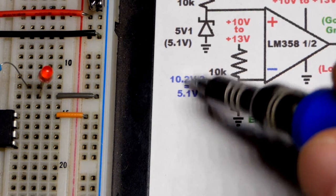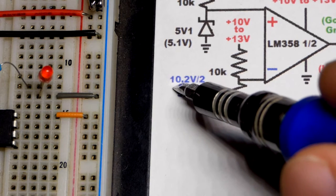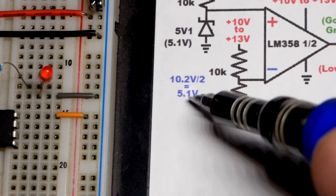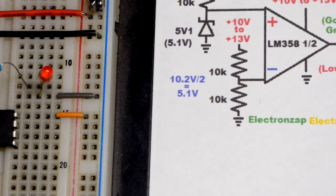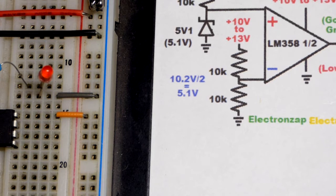If you go higher than 10.2 volts it will be higher than 5.1. If you go lower than 10.2 volts it will be lower than 5.1. That's why the 10.2 volts was where the output changed.